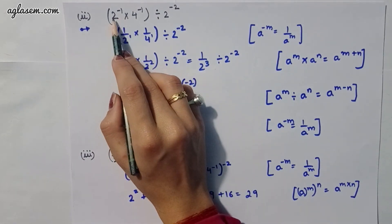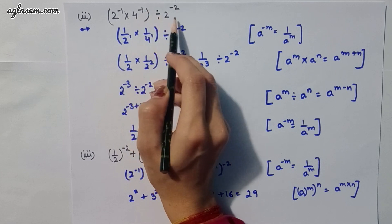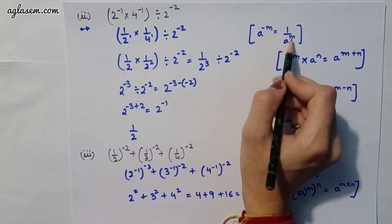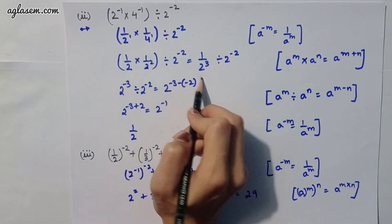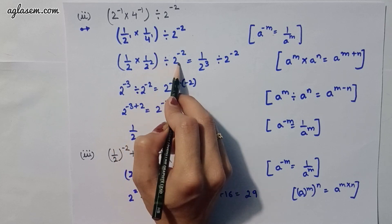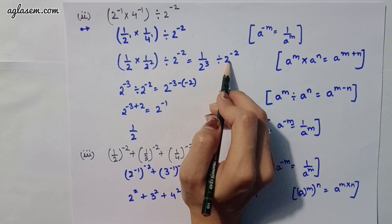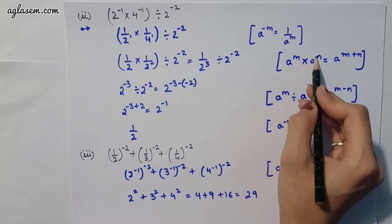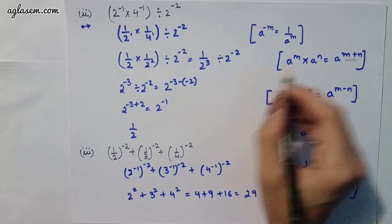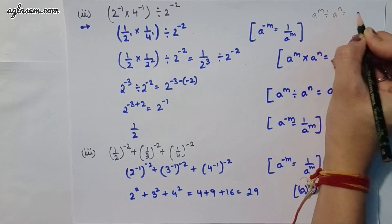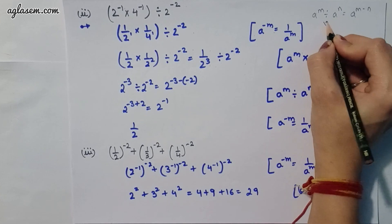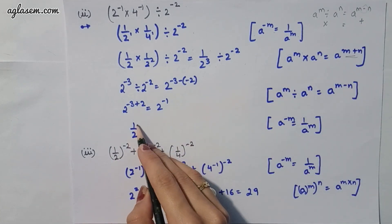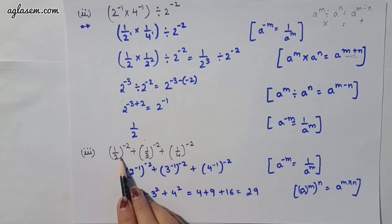Moving to the second part: 2^(-1) × 4^(-1) divided by 2^(-2). Applying a^(-m) = 1/a^m, this becomes (1/2 × 1/4) / (1/2^2). Using the formula a^m × a^n = a^(m+n) and a^m / a^n = a^(m-n), we can solve this and the answer is 1/2.